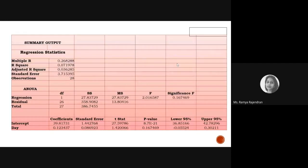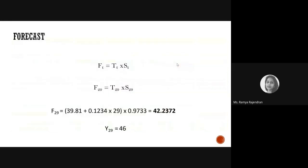So we discussed forecasting accuracy, how to validate your model using Theil's coefficient, how to de-seasonize your data, apply linear regression, and then re-seasonize your data for better forecasted values. Hope you have a good understanding of this. Any questions?